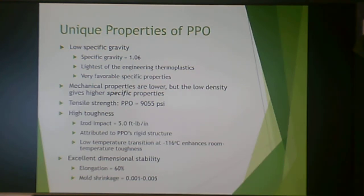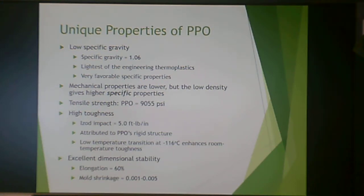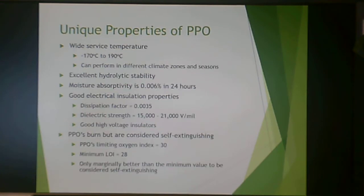PPO has high toughness attributed to its rigid structure. It has a low temperature transition at negative 116°C, which enhances room temperature toughness. It has excellent dimensional stability with very low mold shrinkage. Its service temperature range is very wide — from negative 170 to 190°C — meaning it can perform across many climate zones and seasons, anywhere from Arctic to tropical.